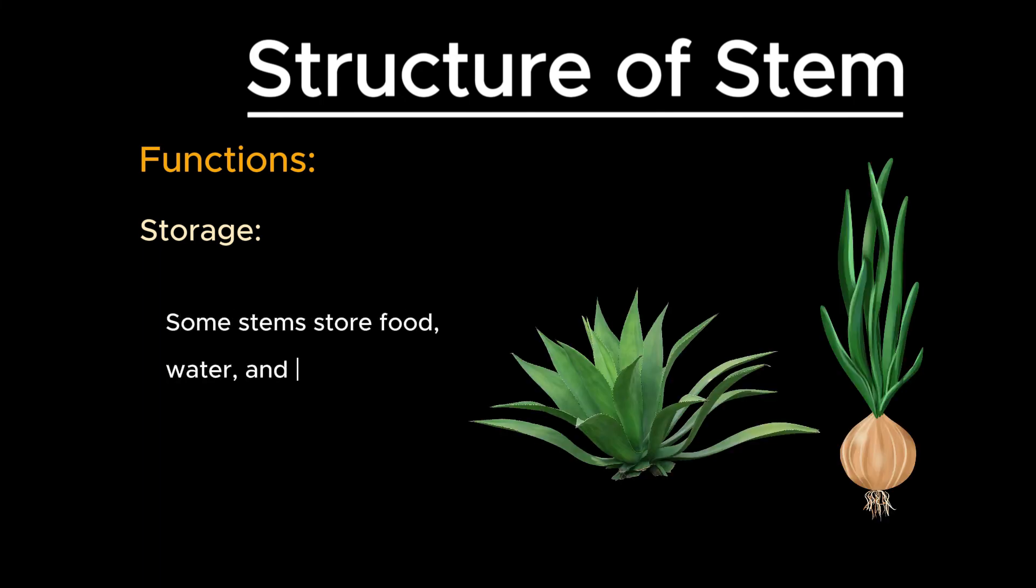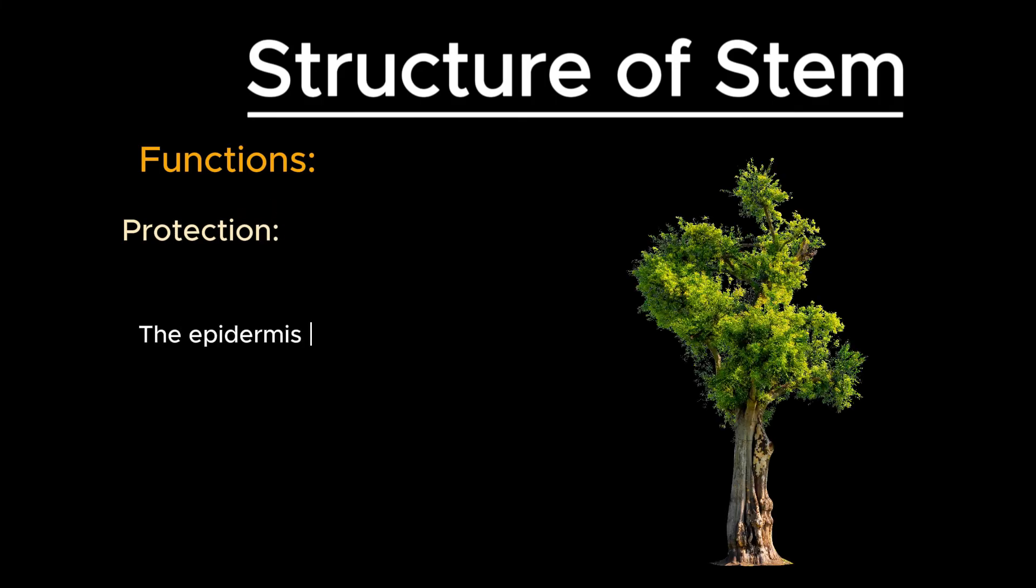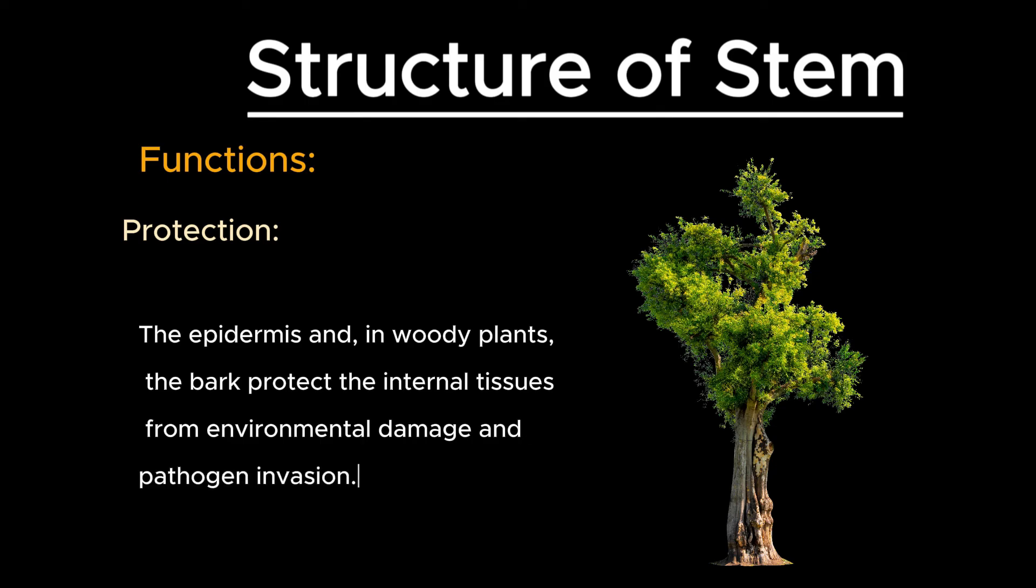Some stems store food, water, and other nutrients. The cambium allows for secondary growth, increasing the diameter of the stem in woody plants. The epidermis and, in woody plants, the bark protect the internal tissues from environmental damage and pathogen invasion.